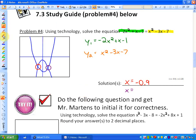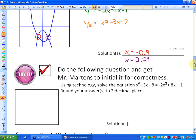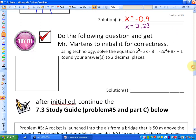So what you're going to want to do now is see if you understand the concept by doing a question in your study guide and getting me to initial it to see how you understood it. And then after that you could move on to the 7.3 study guide problem number five and part C below with the YouTube lesson.